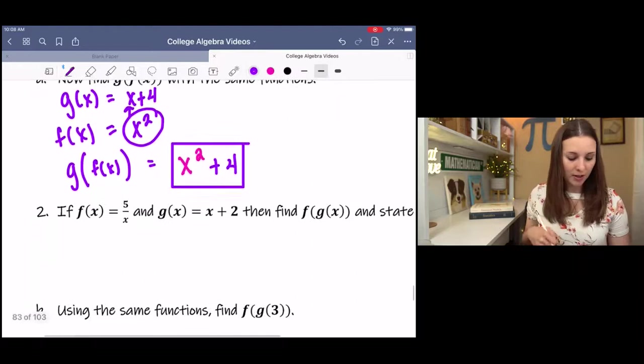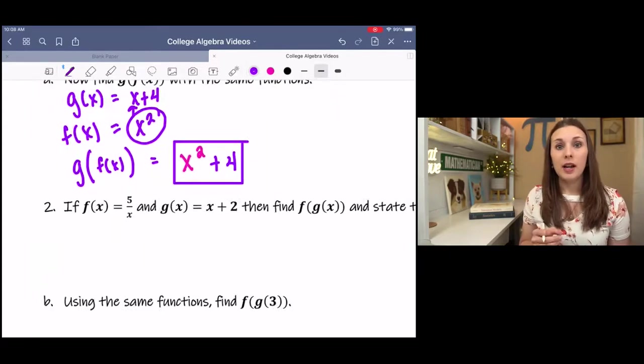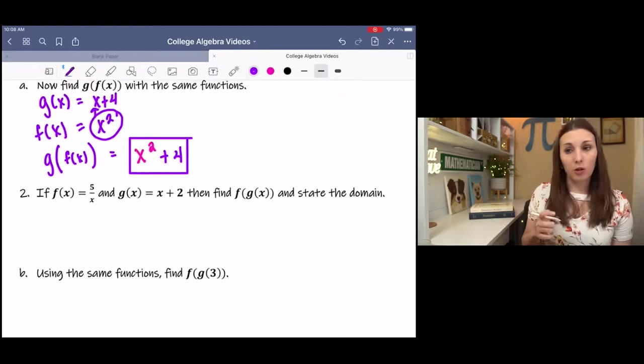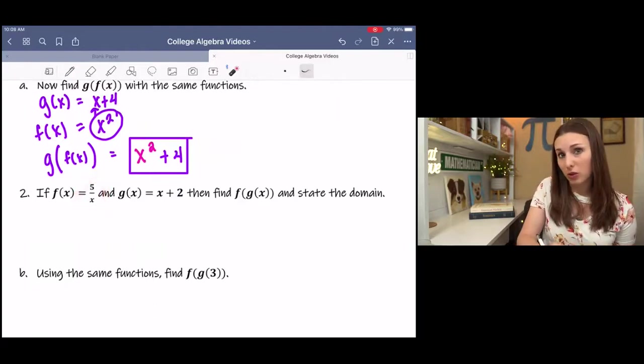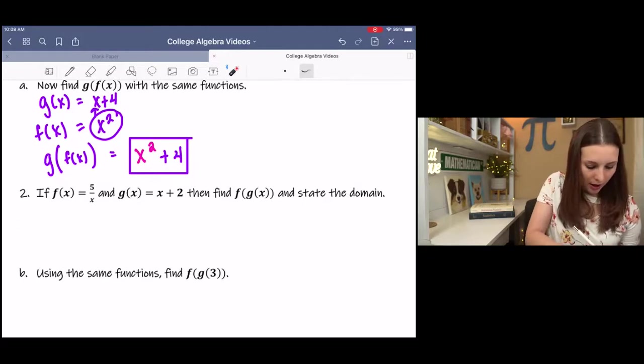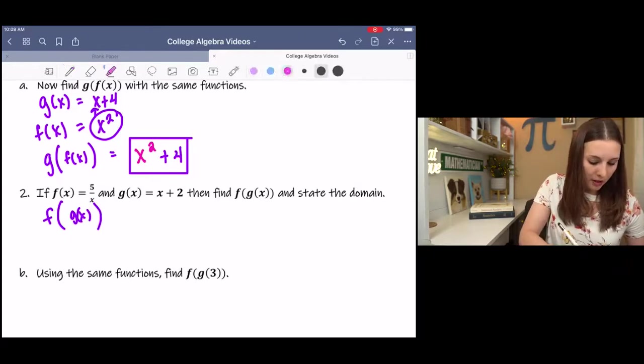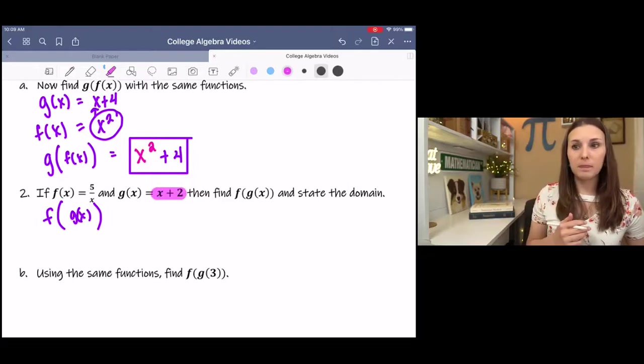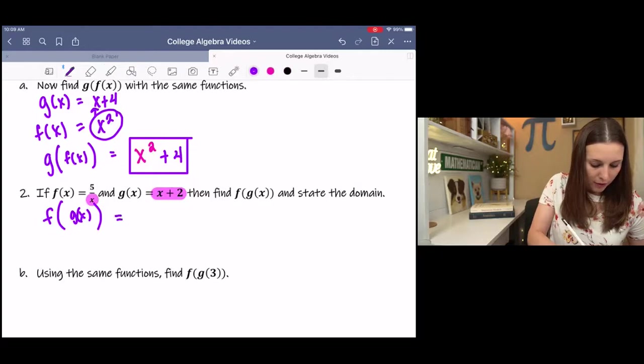Next example, if f of x is 5 over x and g of x is x plus 2, find f of g of x and state the domain. Now, there's a reason why it says state the domain, and you'll see in just a second, or actually you can see it now, the first function is a rational function. And rational functions have excluded values. So we're going to have to state those excluded values as part of our answer. If we want f of g of x, then that means I'm going to be taking g of x and plugging it into f of x.